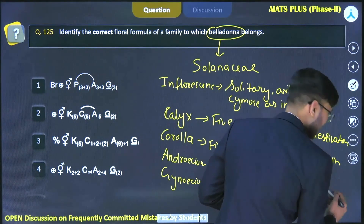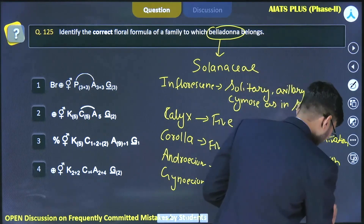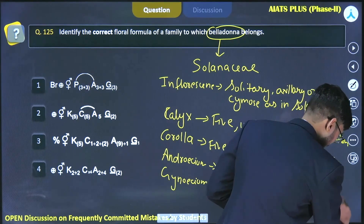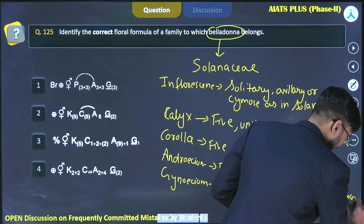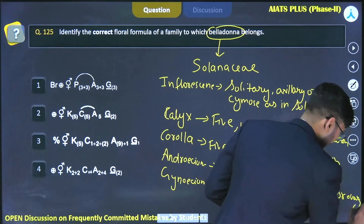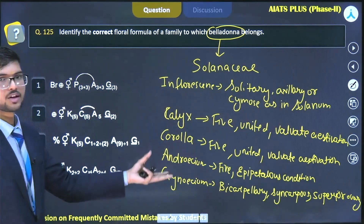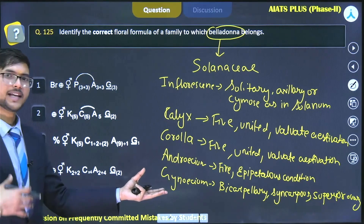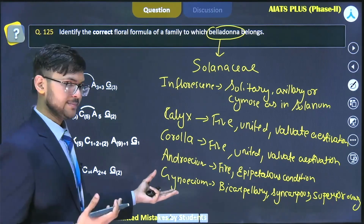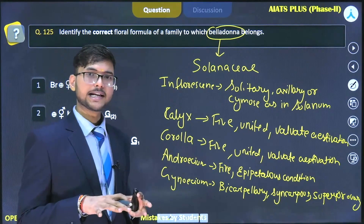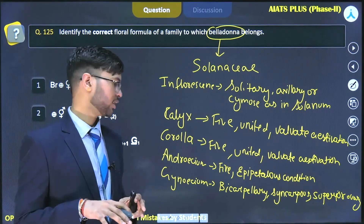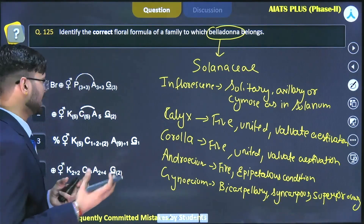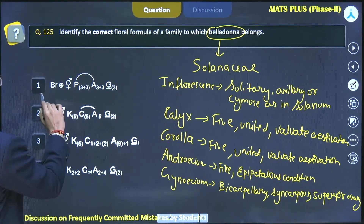The gynoecium is located above the thalamus with all other floral parts below it, so it's a superior ovary. The seed is endospermous and the fruit is a berry — like a tomato, which is a berry.